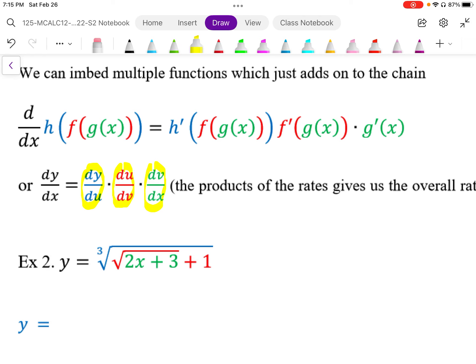When we look at this, when we multiply these rates together, I want you to notice something here: these terms du du will cancel out, dv dv will cancel out, and what we end up with is dy divided by dx.